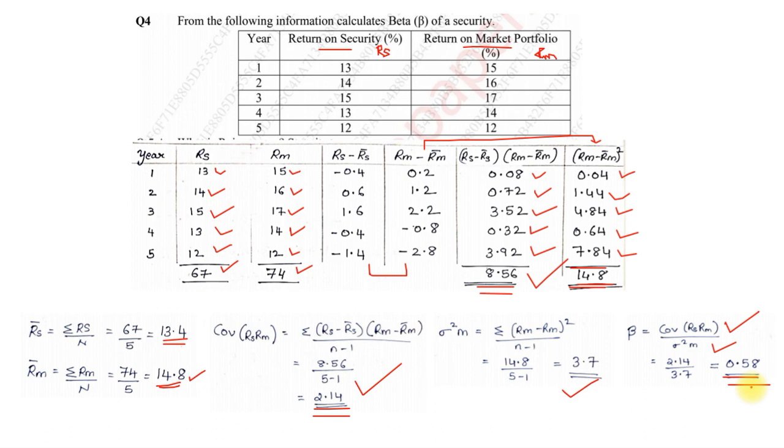So this is how you had to solve the sum based on beta. So these are the two remaining sums in the question paper. One was based on expected return and standard deviation and the other one is based on beta or calculation of beta. So I hope everyone have understood how to solve both these variations or both these types of sums. So with that we will be ending this video here. Thank you.